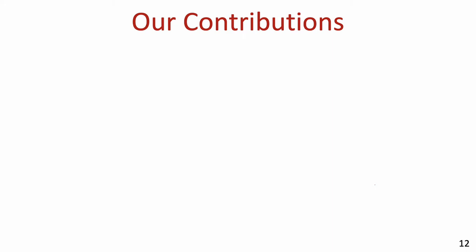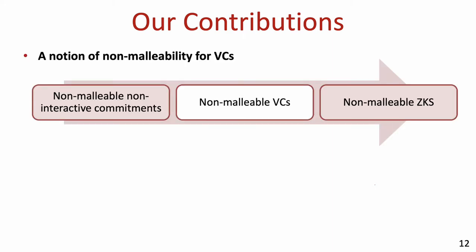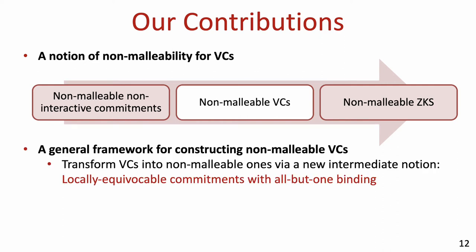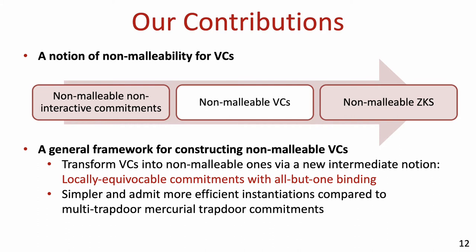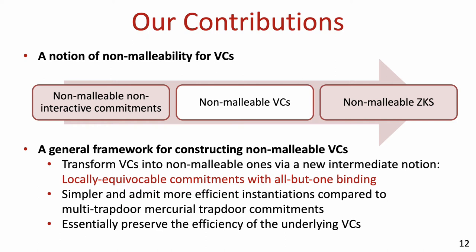With this question in mind, our contributions are the following. First, we put forth a notion of non-malleability for VCs, striking a balance between the weaker notion of standard non-malleable non-interactive commitments and the stronger notion of non-malleable zero-knowledge sets. We then present a general framework: we show how to transform any VC into a non-malleable VC using a new intermediate notion called locally equivocable commitments with all but one binding, which is simpler and admits more efficient instantiations than multi-trapdoor mercurial trapdoor commitments. The resulting non-malleable VCs essentially preserve the efficiency of the underlying VC.